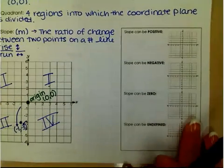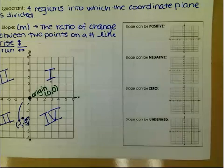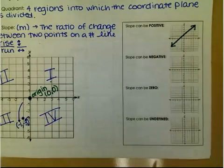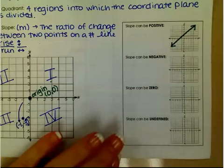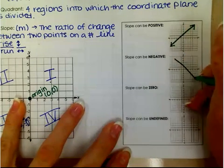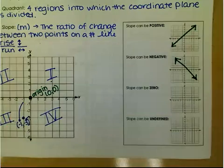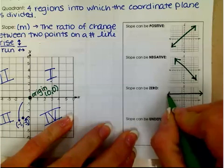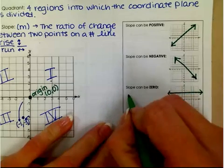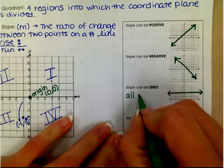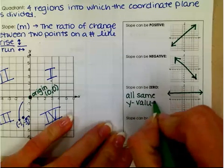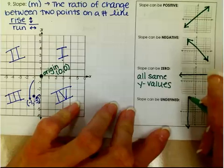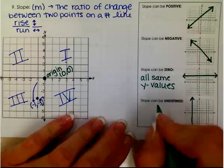When talking about slope, we can have four different types. Slope can be positive — it is positive if the slope is increasing from left to right, or going up from left to right. Slope can be negative — a negative slope is a slope that is falling from left to right. Slope can be zero — a zero slope is just a horizontal line, and all of the points on that line have the same y-values. We can also have an undefined slope — an undefined slope is a vertical line, and all of the points on that line have the same x-values.